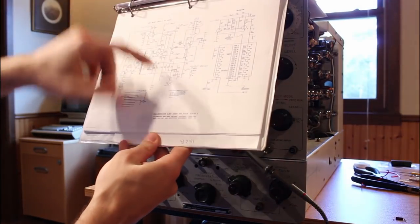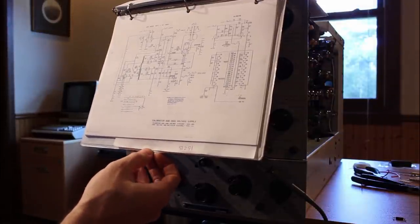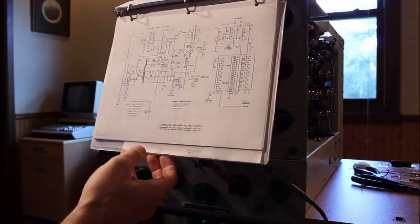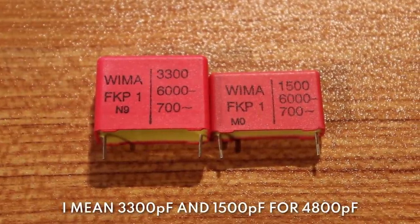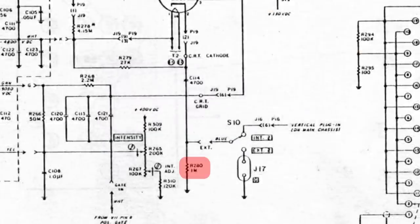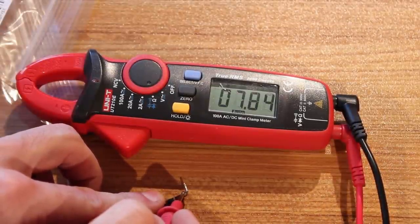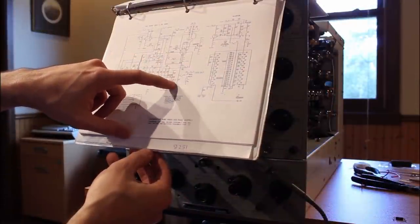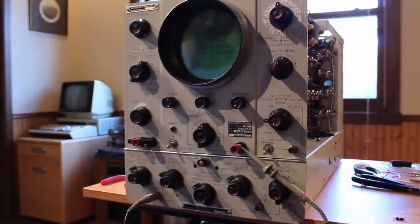The capacitor that went out was C114. That's a 4,700 picofarad, 6,000 volt capacitor. I had to make a new one out of a 3,300 picofarad and a 1,300 picofarad in parallel to give me 4,600 picofarad, which I believe is going to be close enough. But R280 here, I also measured to be totally out of spec. It's supposed to be a 1 megaohm resistor, and it measured out at like 8 megaohms. Whether this resistor caused the death of the capacitor or the death of the capacitor caused the death of the resistor, I'm not really sure. But either way, both were bad. Both have been replaced. And I think that brings us up to another test fire here.